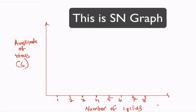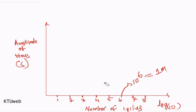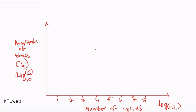We use a log base 10 scale for convenience to represent very large numbers. Since we are taking a log scale on the x-axis, we are also taking a log scale on the y-axis, where the stress value is log base 10. When you want to retrieve a value from this graph, you have to take the antilog. Now we are going to conduct an experiment.